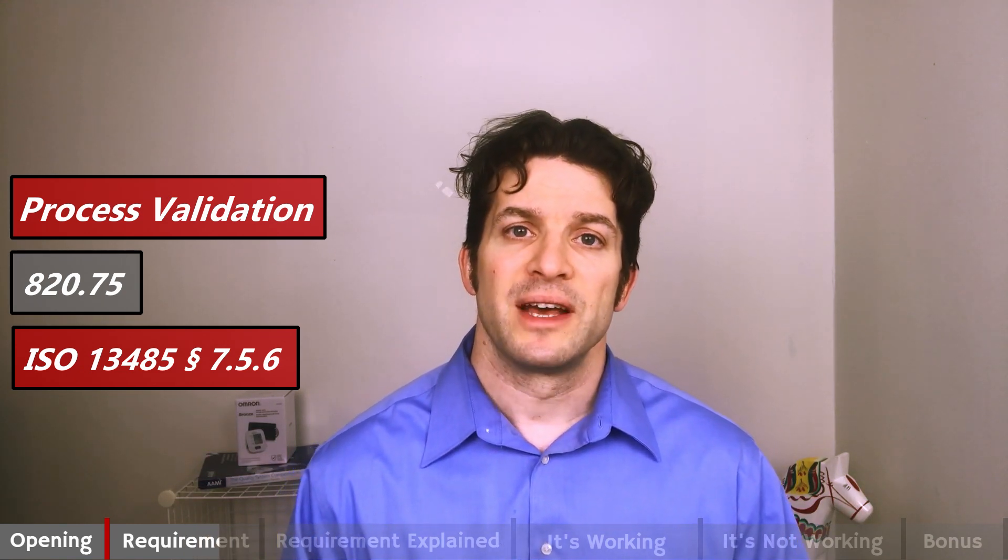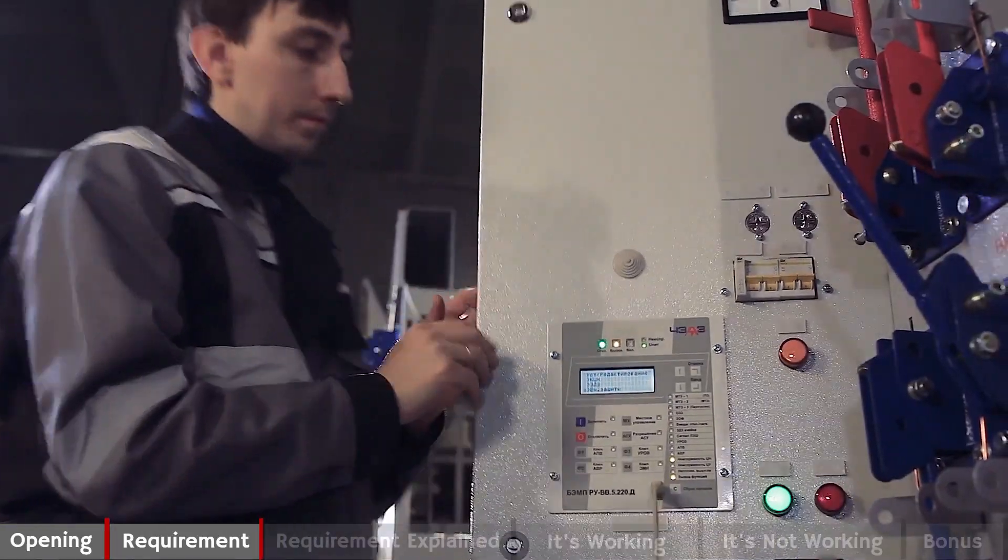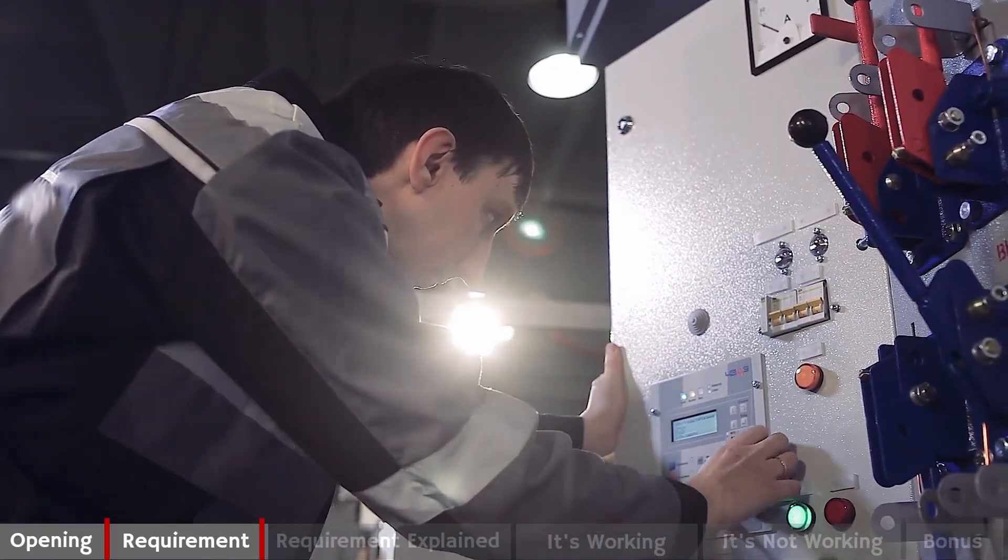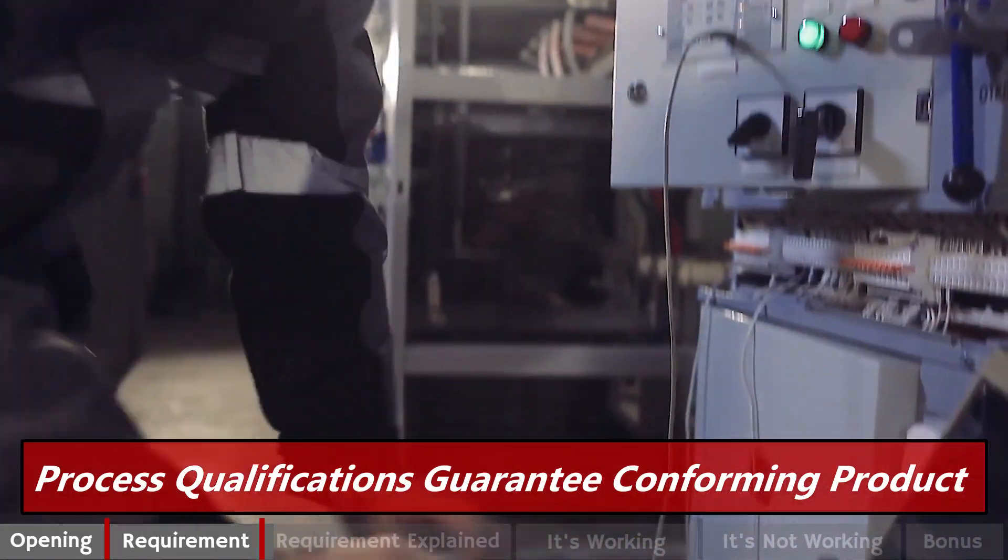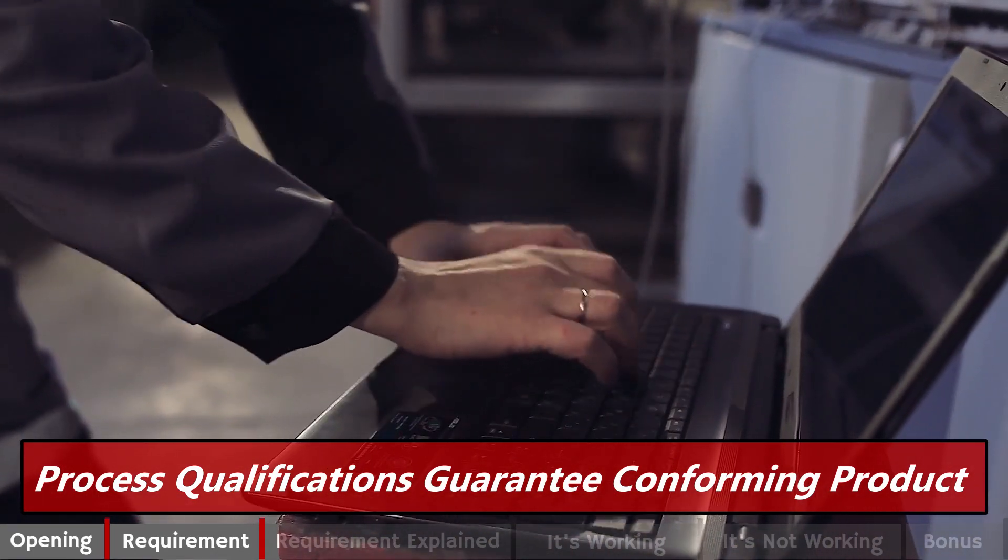Our requirement process validation comes directly from 820.75 and 1345 section 7.5.6. Process validation in five words: Process qualifications guarantee conforming product.